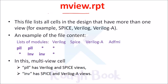mvue.rpt is one of the report files which are stored in the .msv directory. This file lists all the cells in the design that have more than one view. Usually cells will have one view, so cells with more than one view are treated specially.